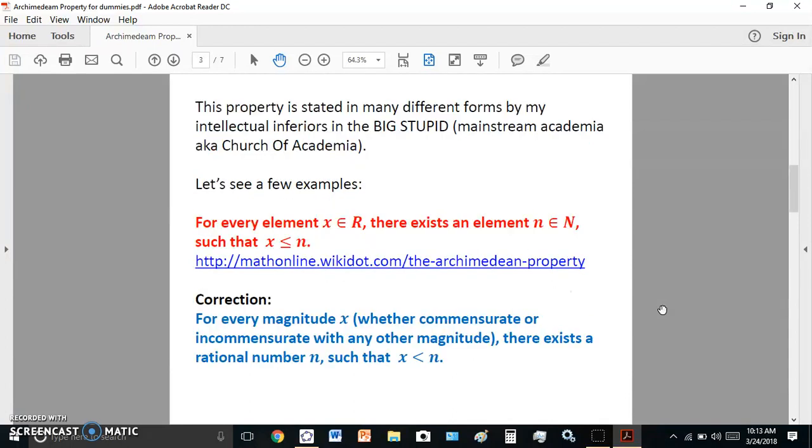So this property is stated in many different forms by my intellectual inferiors in the big stupid. Let's look at the first one. The one in red which says, for every element X in R, there is no R by the way, there is no set R, there is no infinite set, infinity is a junk concept. There exists an element N, which is part of another imaginary set, natural numbers, imaginary infinite set such that X is less than or equal to N. That's incorrect. So let's give the correct statement. As you see down in the blue over here, I'm correcting it for you. For every magnitude X, whether it's commensurate or incommensurate with any other magnitude.